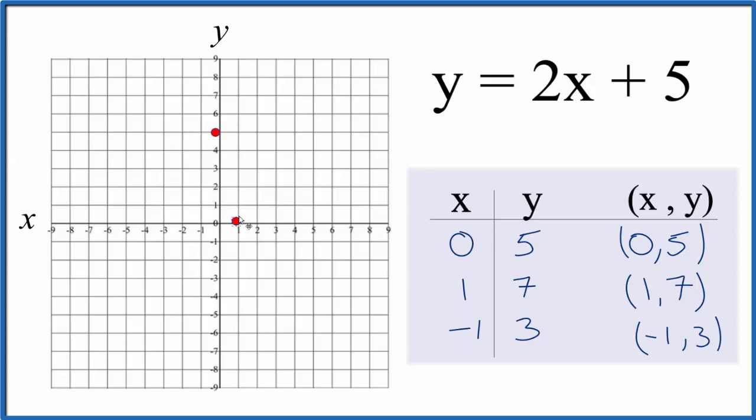We go to 1 on x and then we go up to 7, and then we have x is minus 1 so we go this direction and then we go up 1, 2, 3, and you can see these all are in a straight line. We could have used two points but it's nice to have three to make sure you got the correct answer.